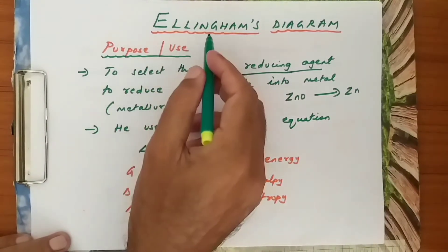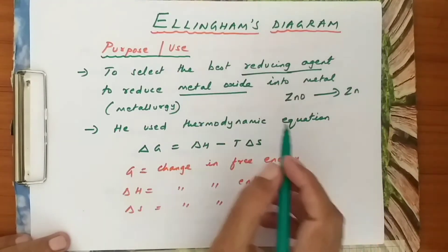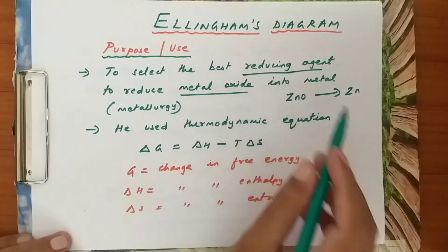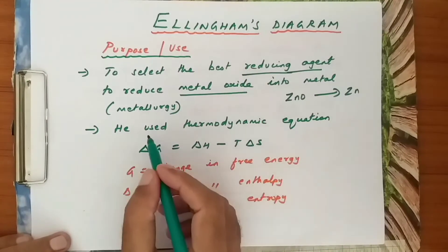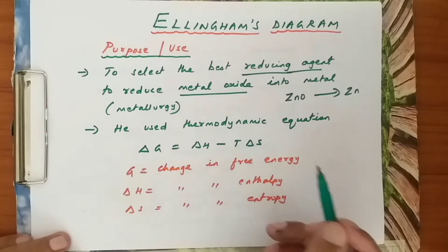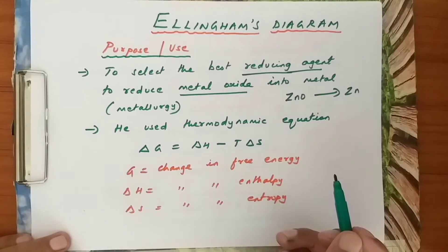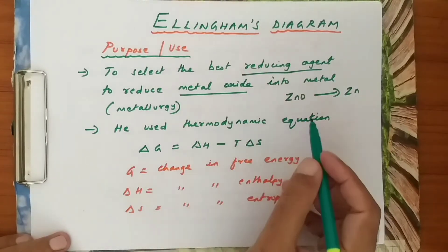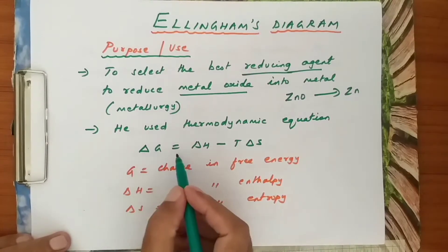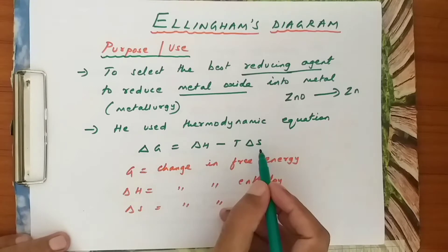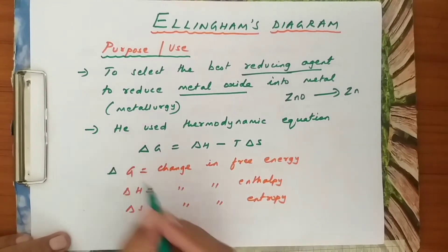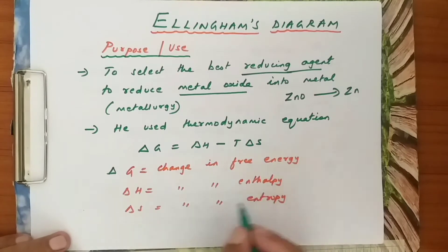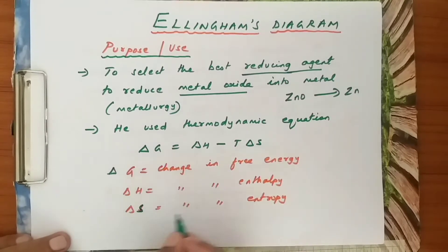This is the purpose of Ellingham's diagram — basically to select the best reducing agent to reduce metal oxide into metal. What Ellingham did was use thermodynamic equations to make a diagram, a graph. The equation Ellingham used was ΔG = ΔH − TΔS, where ΔG is the change in free energy, ΔH is the change in enthalpy, and ΔS is the change in entropy.